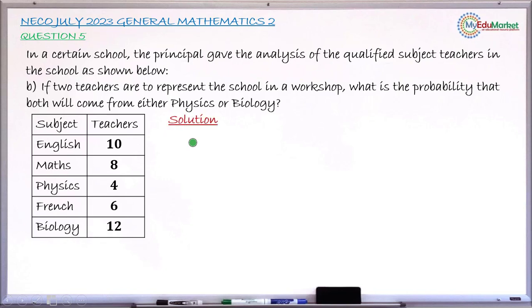Let's see the solution to this problem. What we do first is to get the total number of teachers. That will be our total possible outcome. The total number of teachers from which we are selecting two. So, total number of teachers will be the addition of the frequencies there. Ten teachers for English, eight teachers for Mathematics, four teachers for Physics. So, addition of all those number of teachers gives answer 40.